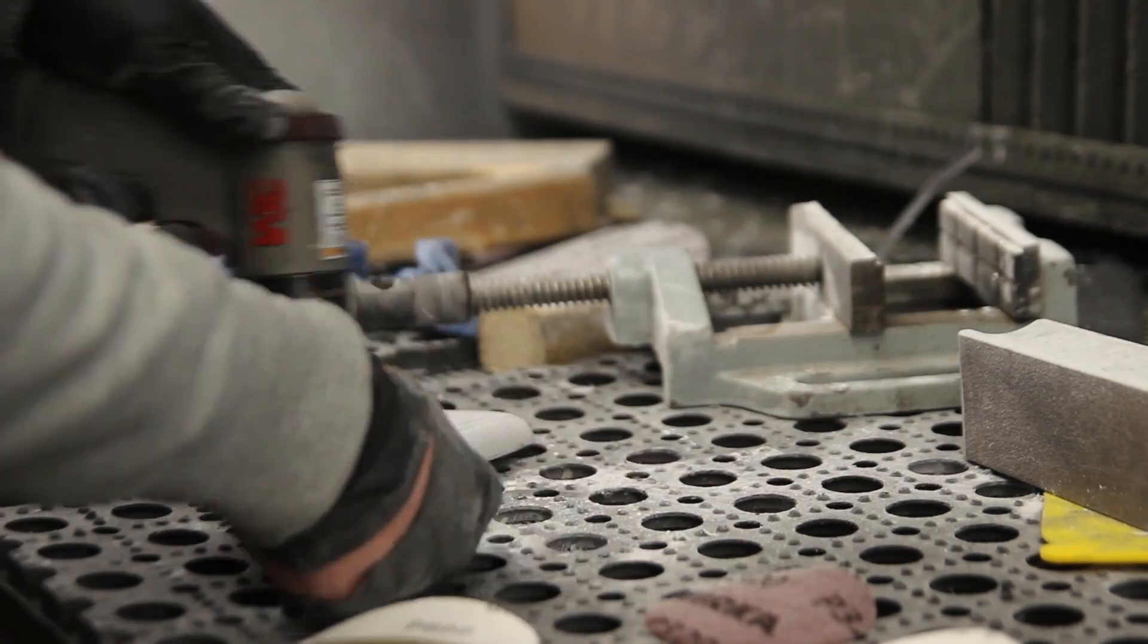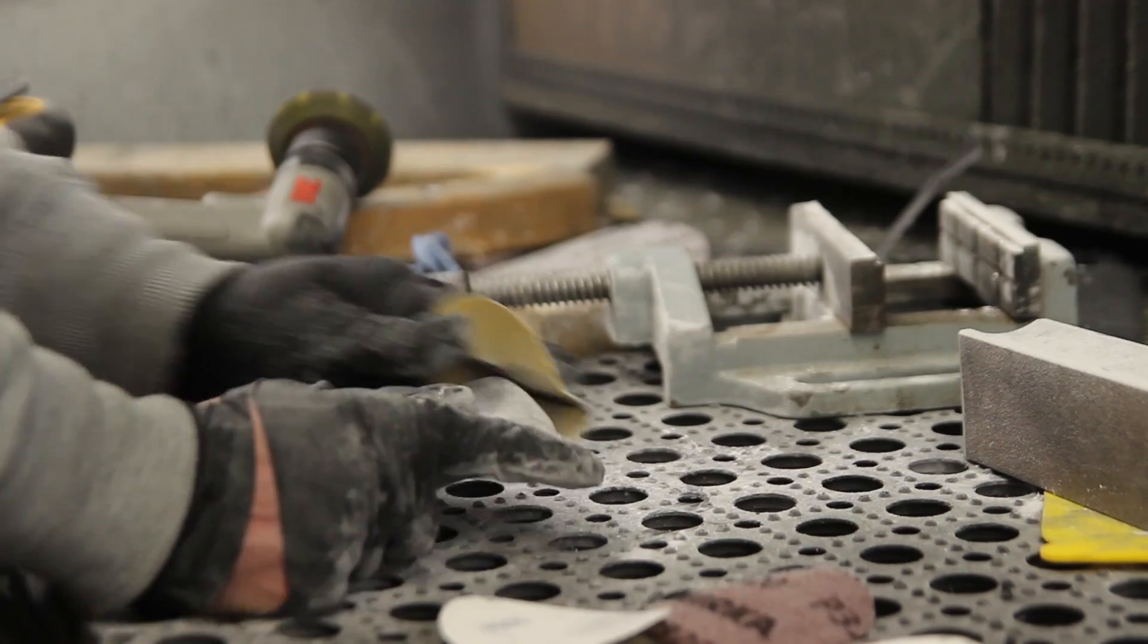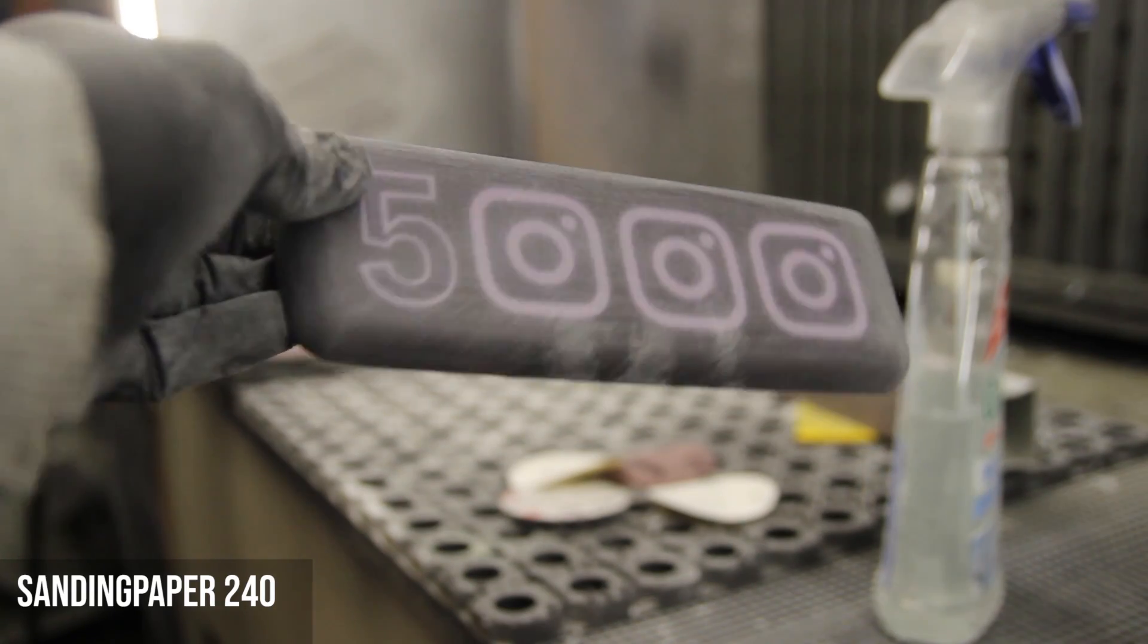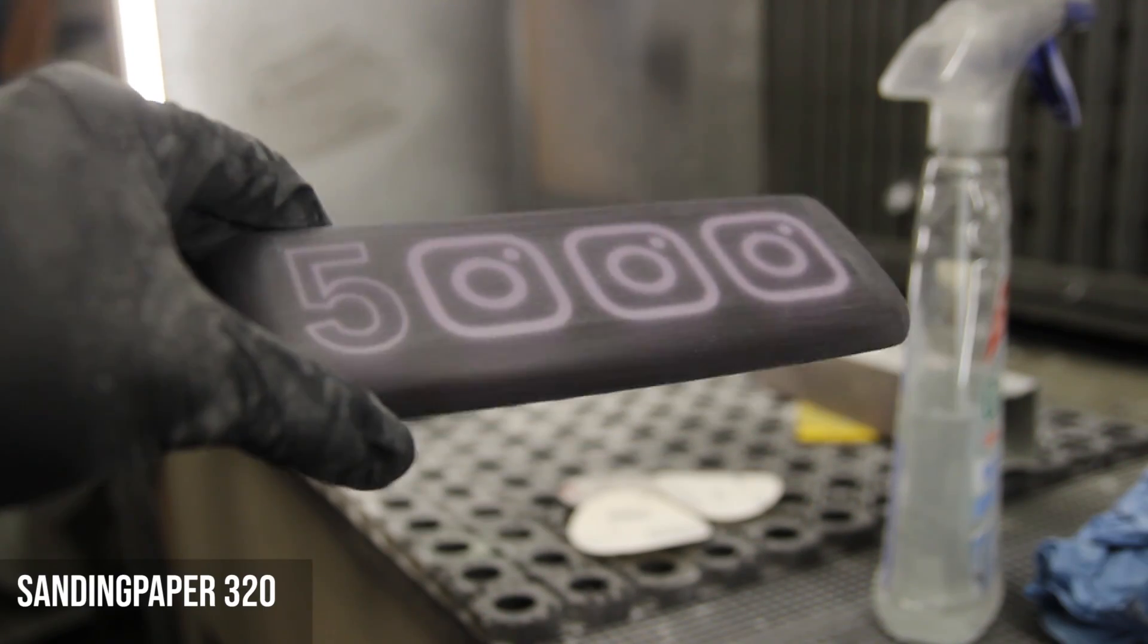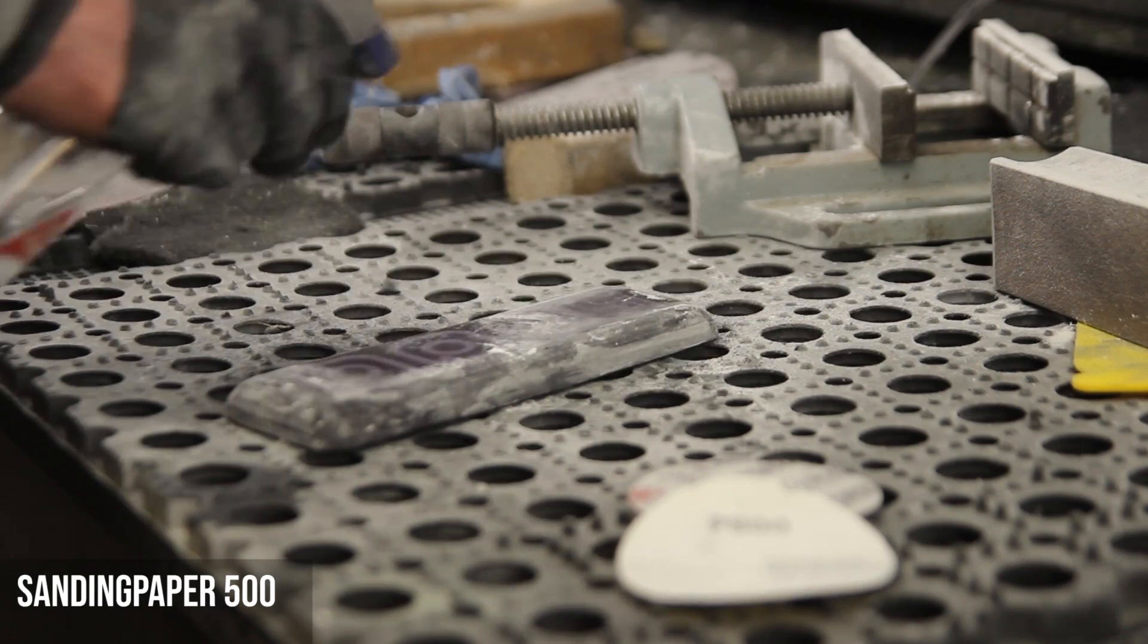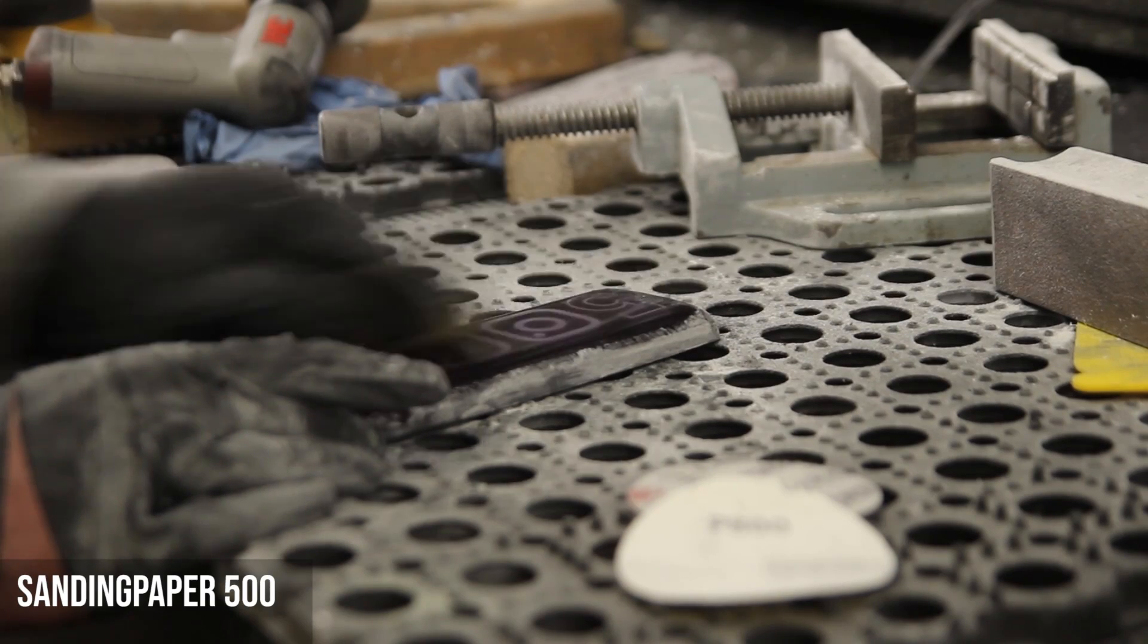I went with a 150, 320, 500, 800 and then 1000 at the end. So I'll just show you after sanding because I know sanding is quite boring to watch on YouTube. But you'll see the results each time after every sanding grit.